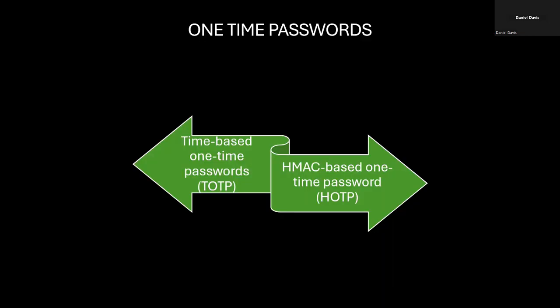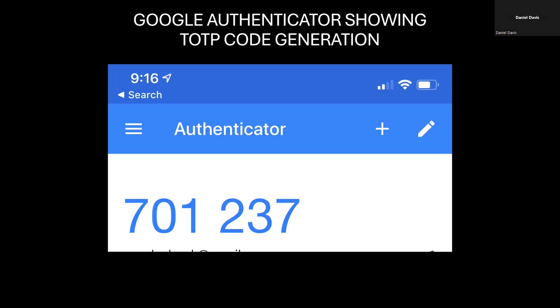A one-time password is a password or passcode that will only be used one time. There are two main categories: TOTP — time-based one-time passwords, which expire after a certain period of time — and HMAC-based one-time passwords, which are hash-based. If you're familiar with the Google or Microsoft Authenticator apps, those are a good example of a time-based one-time password — you get a passcode to your authenticator app and it expires every so many seconds.